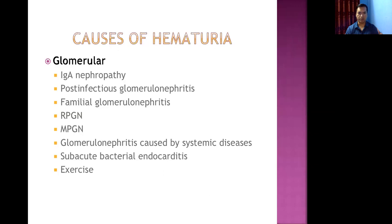Glomerular causes of hematuria include IgA nephropathy (Berger's disease), post-infectious glomerulonephritis, familial glomerulonephritis such as Alport syndrome, rapidly progressive glomerulonephritis (RPGN), membranoproliferative glomerulonephritis (MPGN), glomerulonephritis caused by systemic disease (connective tissue disorders like SLE, systemic sclerosis, Sjögren's syndrome, dermatomyositis, polymyositis), subacute bacterial endocarditis, and even vigorous exercise.